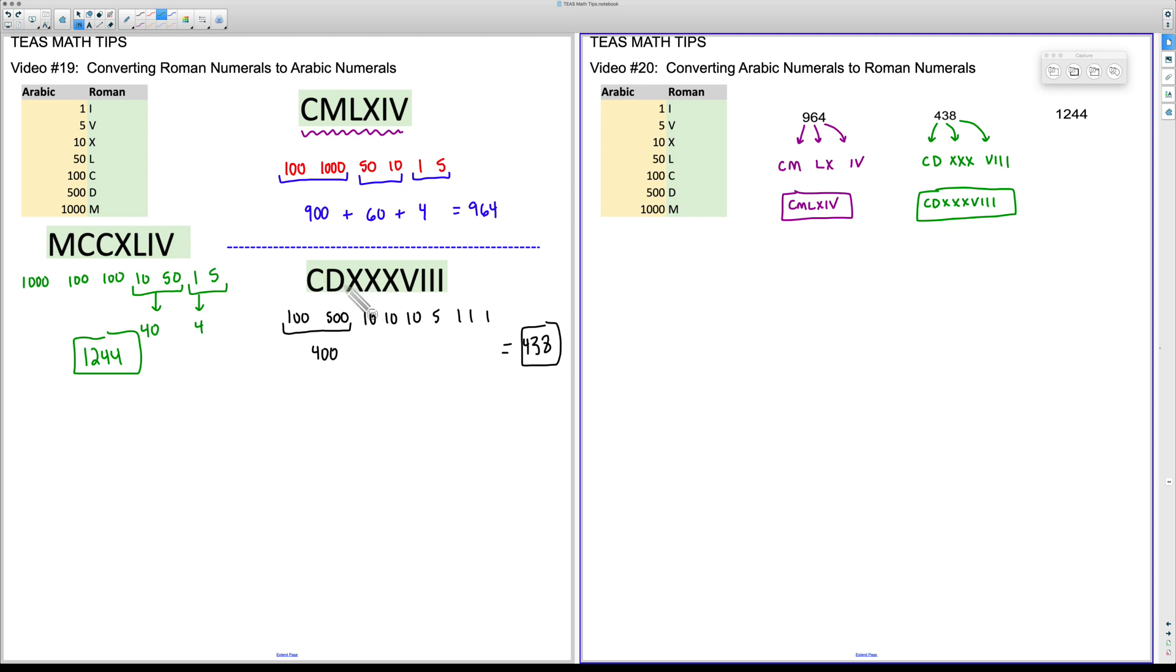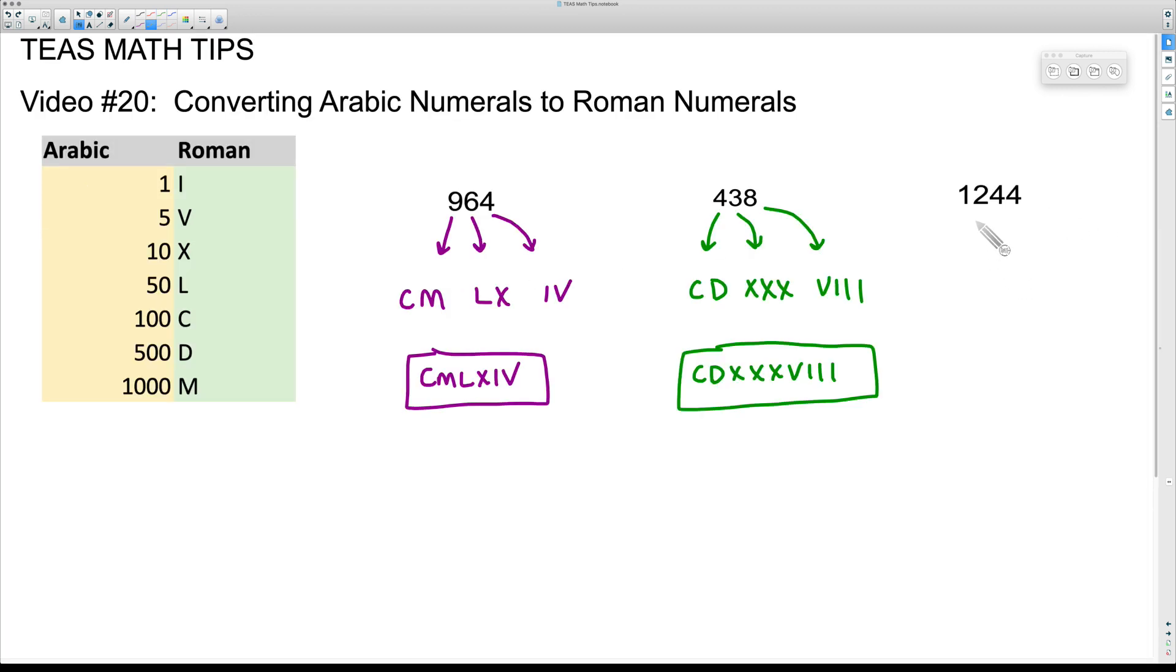Comparing this back to video number 19, CDXXXVIII, perfect. Now the last one here, we can write this one representing 1000 as an M. M is 1000. 200, well we can put two C's beside that. We're not putting four of anything beside each other yet, so the two C's represent the 200.